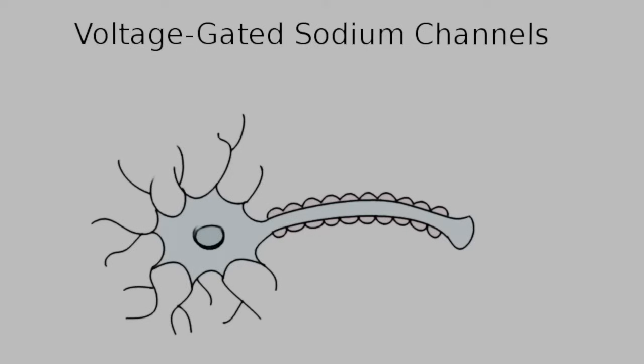The topic for today's video is the voltage-gated sodium channel that occurs in neurons. It exists at the axon hillock and along the length of the axon, and it's responsible for the propagation of an action potential.